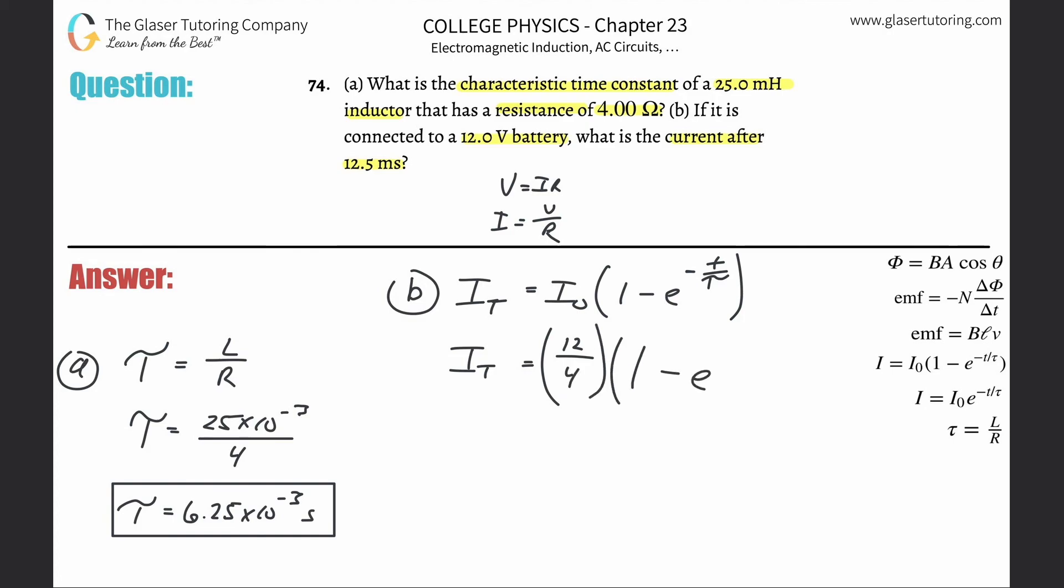Then it's going to be one minus E to the negative T. So how much time has elapsed? Well, they want to find the current after this amount of time. But that's in milliseconds, so we need that in seconds. So there's going to be 12.5 times 10 to the minus three. And then you're going to divide it as it says by the time constant. Now the time constant was 6.25 times 10 to the minus three.